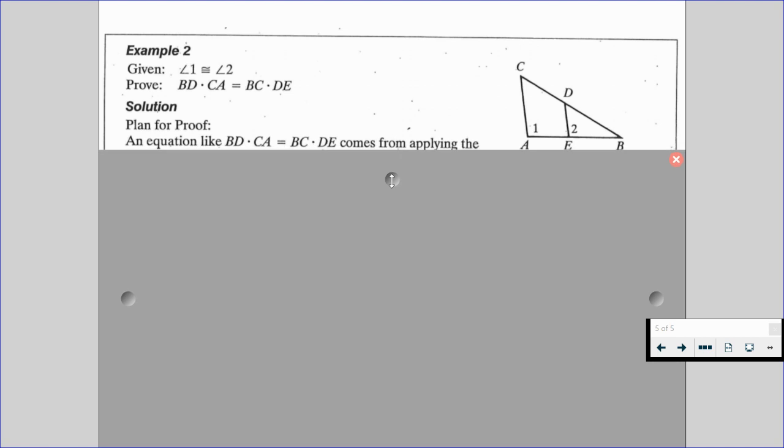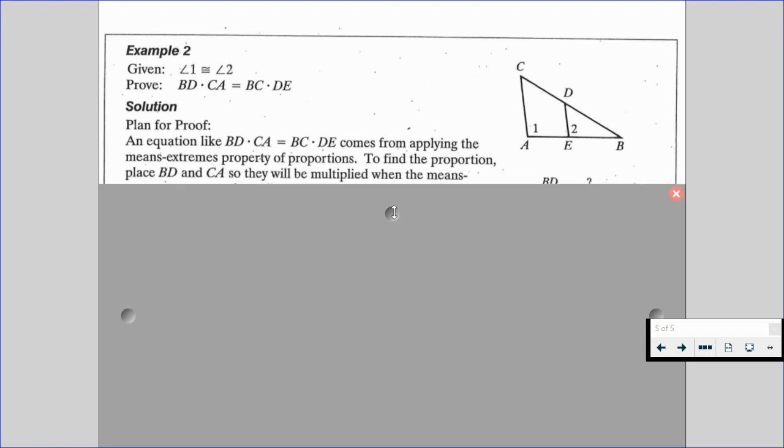So let's plan out this proof. An equation like BD times CA equals BC times DE comes from applying the means-extremes property of proportions. So to find the proportion, we're going to place BD and CA so they will be multiplied when the means-extremes property is applied, like so over on the right-hand side.